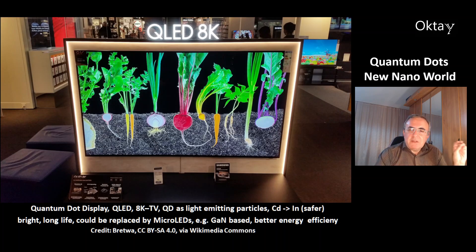This is a picture of the quantum dot display QLED. This is a 8K TV. Quantum dots are used as light emitting particles. For example you can use cadmium compounds. They were replaced by indium compounds. They are safer. And the advantage of the quantum dot display is that it's very bright. It has a long life.